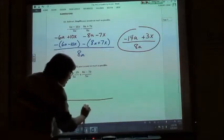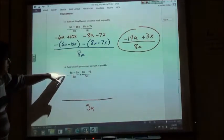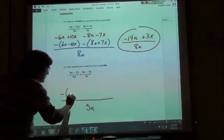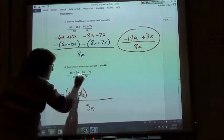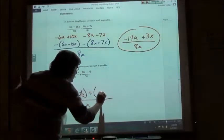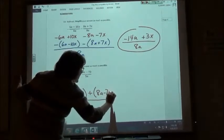My denominator is 5a. This one has a minus sign in front, and so in parentheses, 4a minus 2b. This one has a plus sign in front, in parentheses, 8a minus 7b.